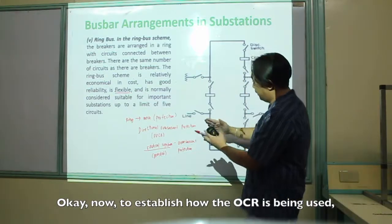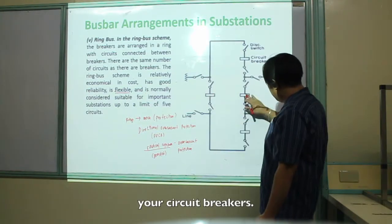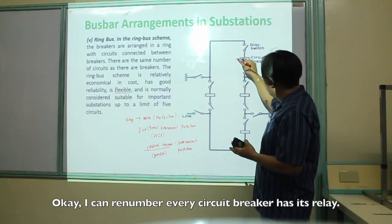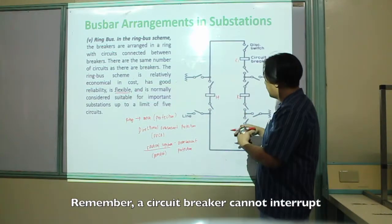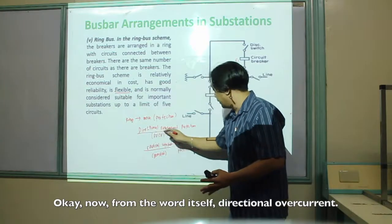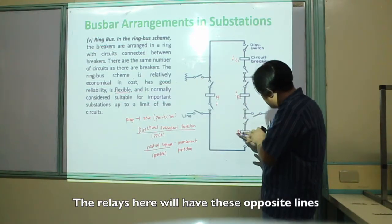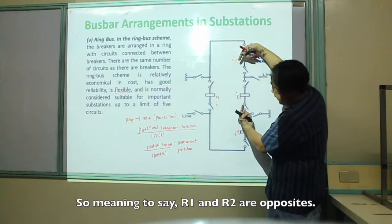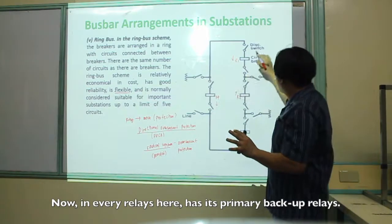To explain how DOCR is implemented: every circuit breaker has its corresponding relay. Remember, a circuit breaker cannot interrupt without proper intelligence from its relay. From the name itself — Directional Overcurrent — the relays will have opposite flow directions. R1 and R2 are opposite, and R4 and R2 are opposite. In every relay, there is a primary and a backup relay.